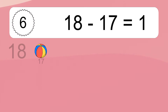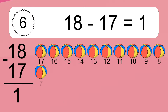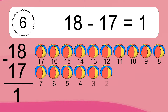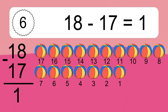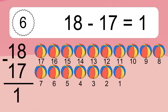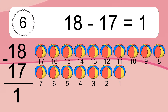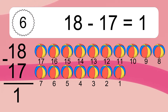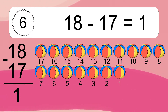18 minus 17 equals what? 18 minus 17 equals 1. Let's count it: 17, 16, 15, 14, 13, 12, 11, 10, 9, 8, 7, 6, 5, 4, 3.